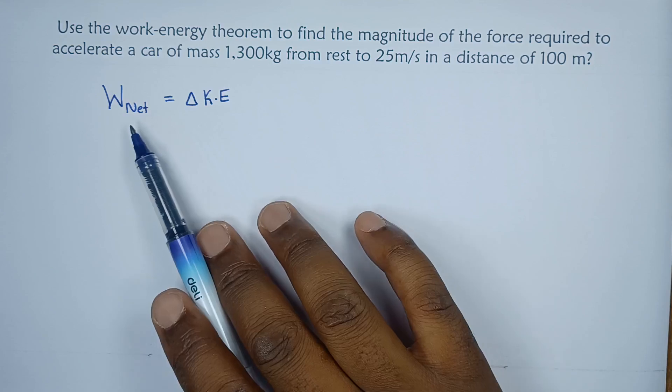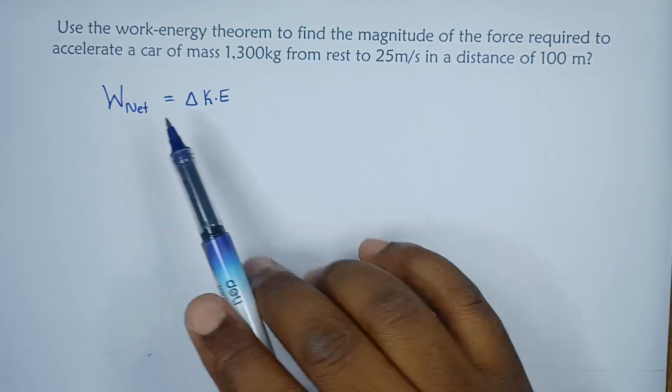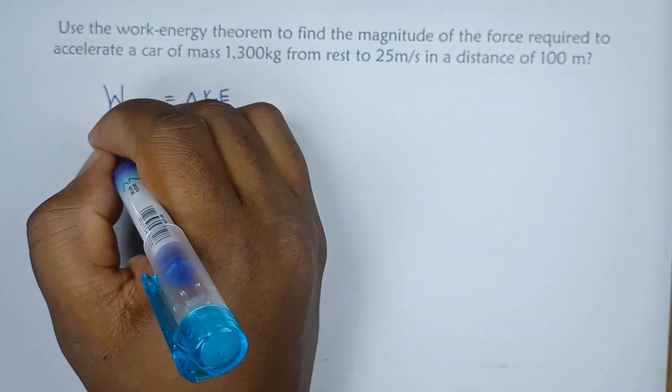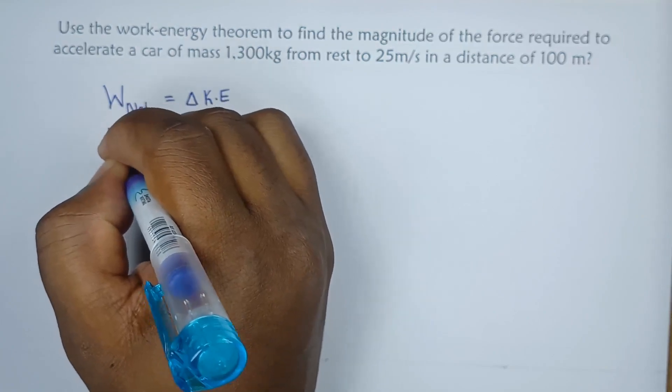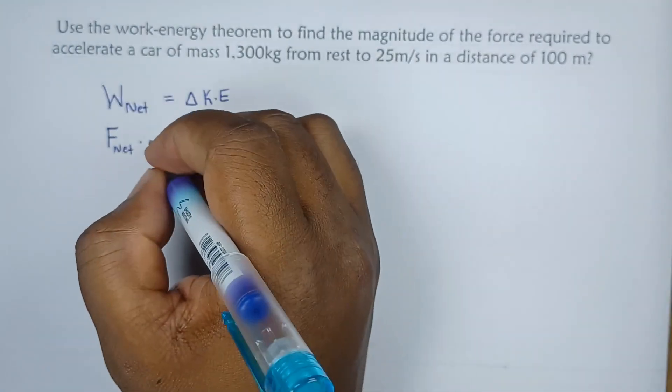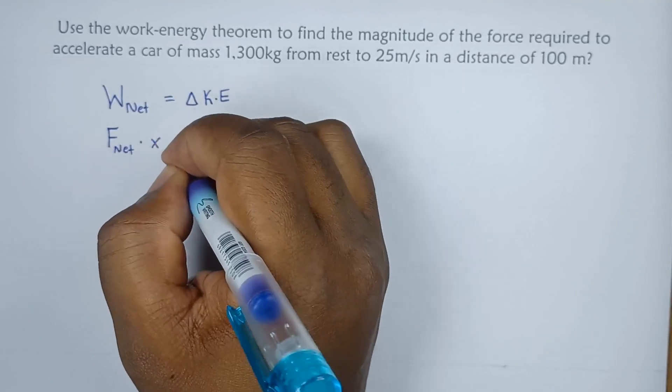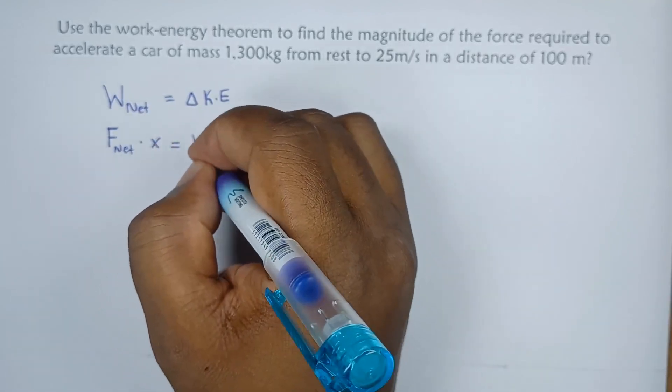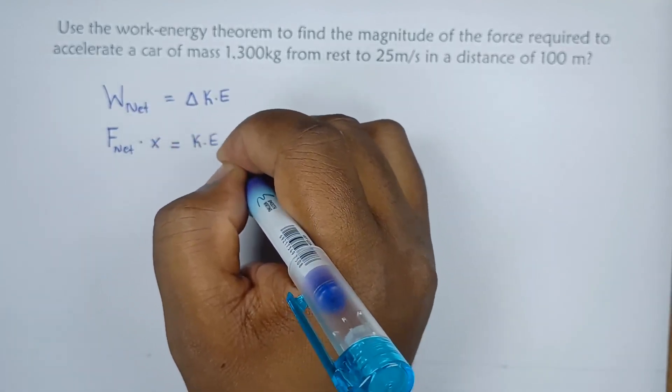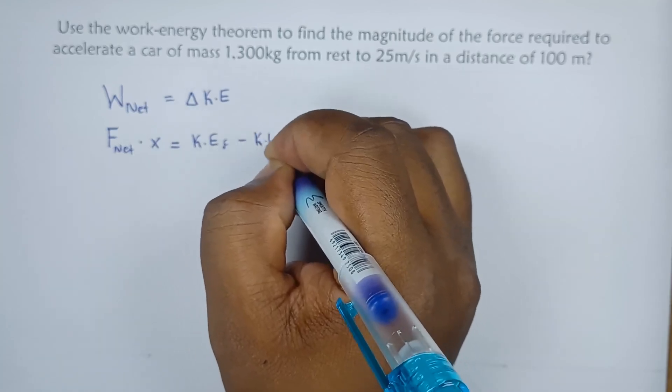At this stage, we know that the net work is given by force net multiplied by the displacement, let's just use x. The change in kinetic energy is the final kinetic energy minus the initial kinetic energy.